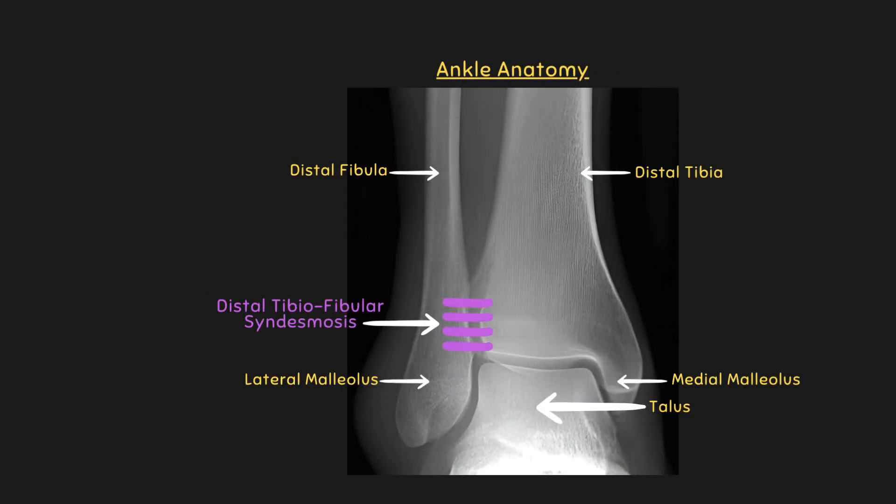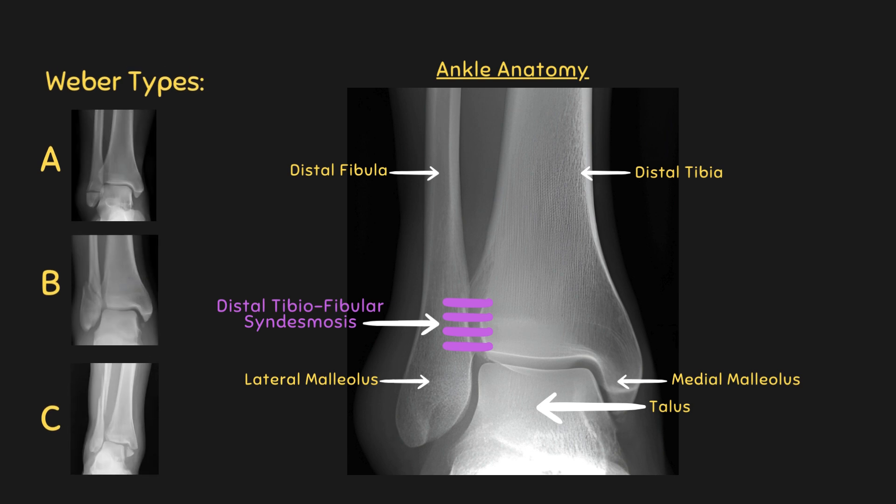Here we have an AP x-ray of the ankle. We have highlighted the key anatomical landmarks to make it easy to understand the concepts we will be talking about today. The key structure to be aware of is the distal tibiofibular syndesmosis. Weber A, B, or C fractures are determined by where the fracture occurs in relation to the ankle syndesmosis. Simply put, the syndesmosis is a joint formed of several ligaments located between the distal tibia and fibula. These ligaments help to keep the ankle joint intact, and fractures involving the syndesmosis can cause instability of the ankle joint itself.